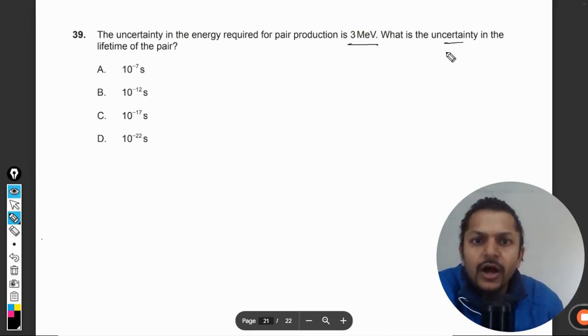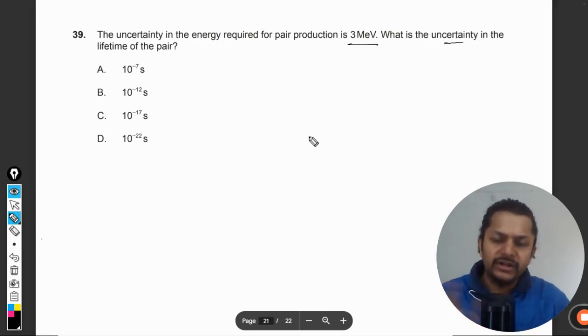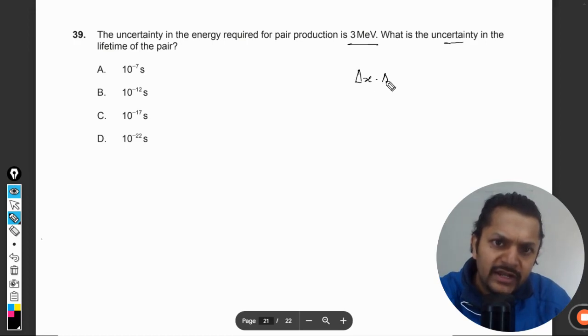We know that the uncertainty principle given by Heisenberg can be written in two ways. The first is the uncertainty in the position and the uncertainty in momentum, that will be greater than h by 4π.